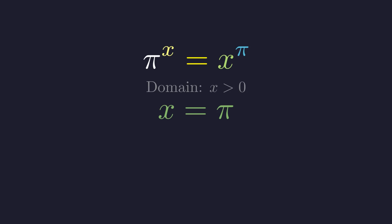Now, by inspection, there's one obvious solution that jumps out. If x equals pi, then both sides become pi to the power of pi so the equation is satisfied. But here's the real question. Is this the only solution?